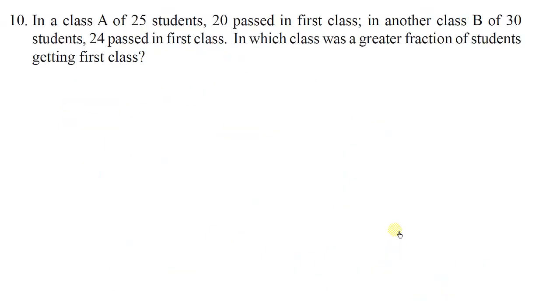Next question, question number 10. In a class A of 25 students, 20 passed in first class. In another class B of 30 students, 24 passed in first class. In which class was a greater fraction of students getting first class? In class A, there are 25 total students, of which 20 students passed in first class. That means first class, meaning 60 percent or more. Similarly, in class B there are 30 total students, and 24 students passed in first class. 24 students passed in first class, meaning 60 percent or more. Now we'll find the fraction for both class A and class B.